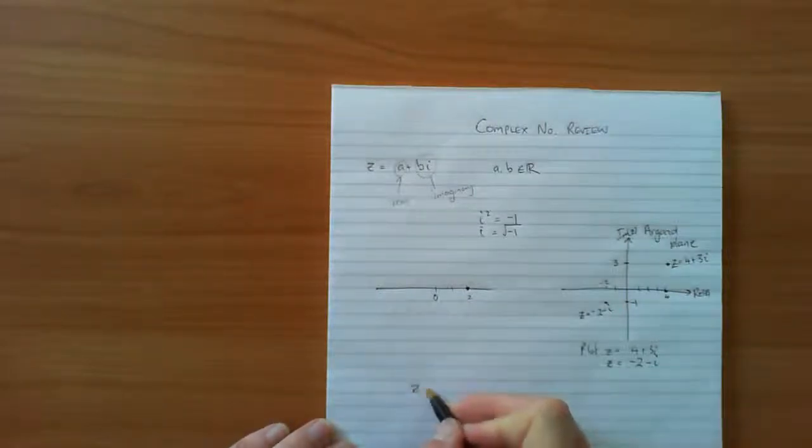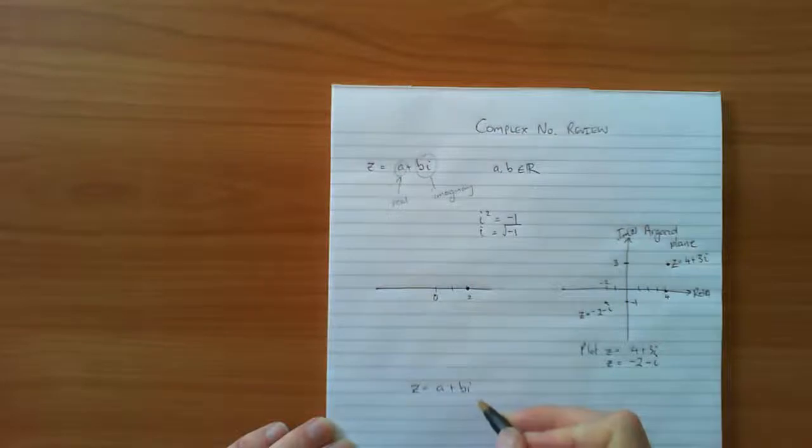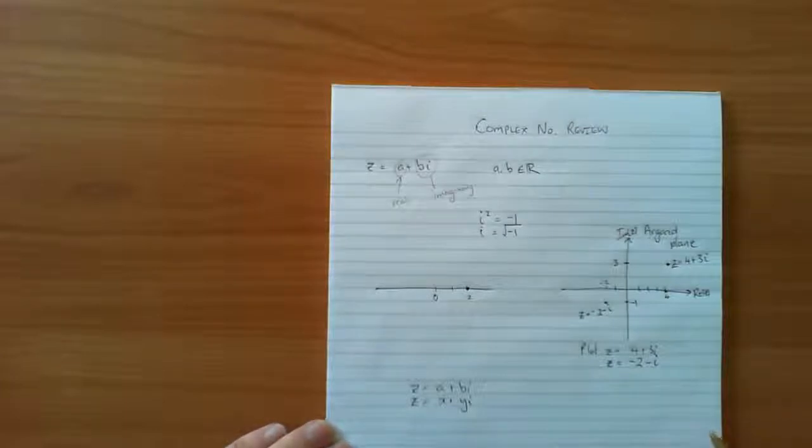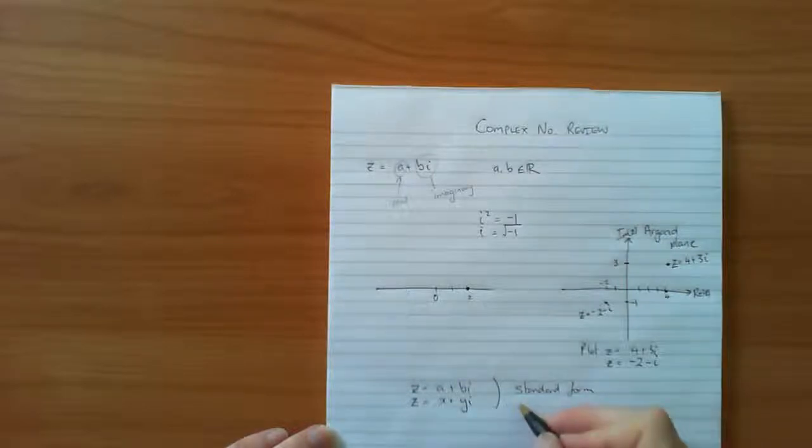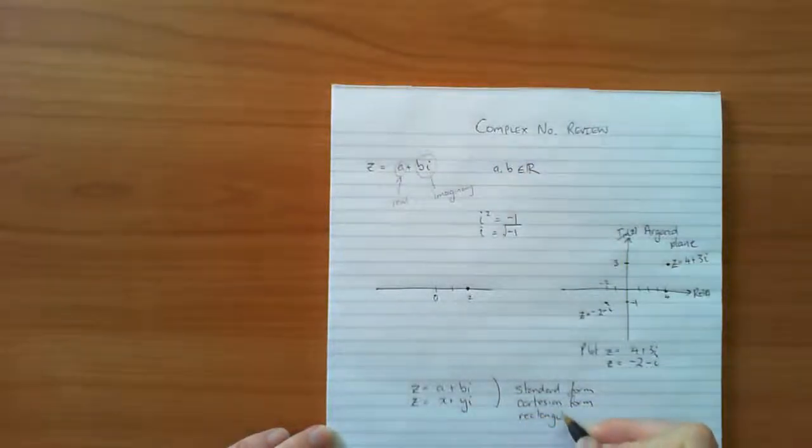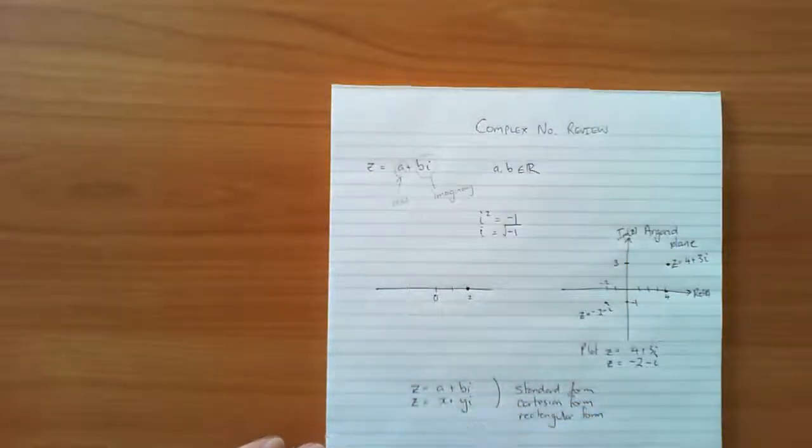Now what we've been talking about are complex numbers in the form Z equals a plus bi. By the way, in some books you'll see that standard form could also be written as Z equals x plus yi. Same thing, just different variables used. All of these are what we call standard form. Other names you'll hear for it are Cartesian form and rectangular form. So they're common names that we use for this form of a complex number.